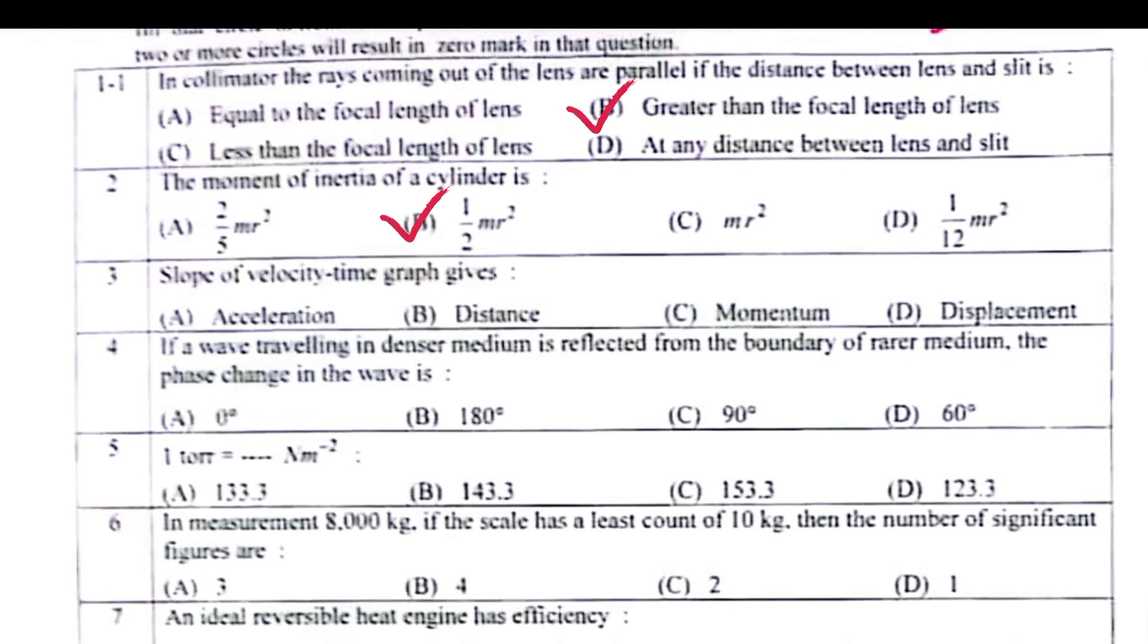Slope of velocity-time graph gives acceleration. If a wave traveling in denser medium is reflected from the boundary of rare medium, the phase change in the wave is 180 degrees.